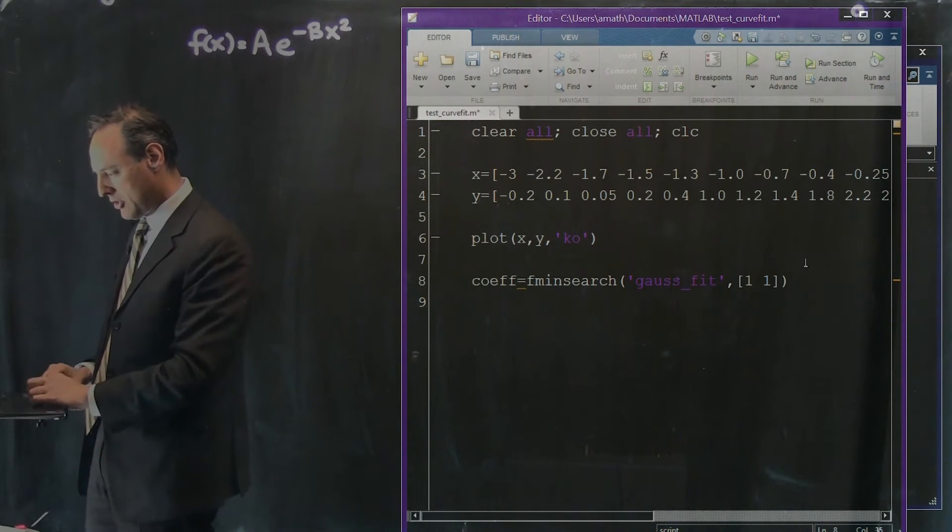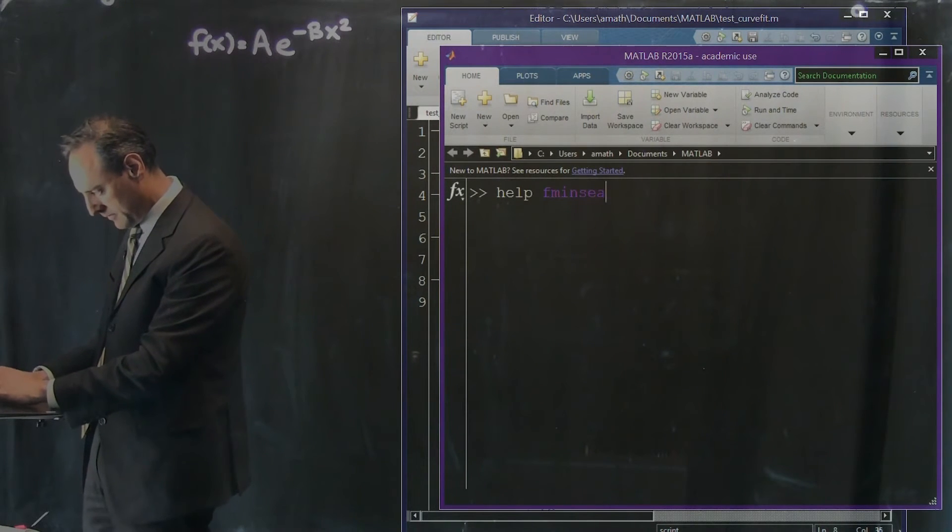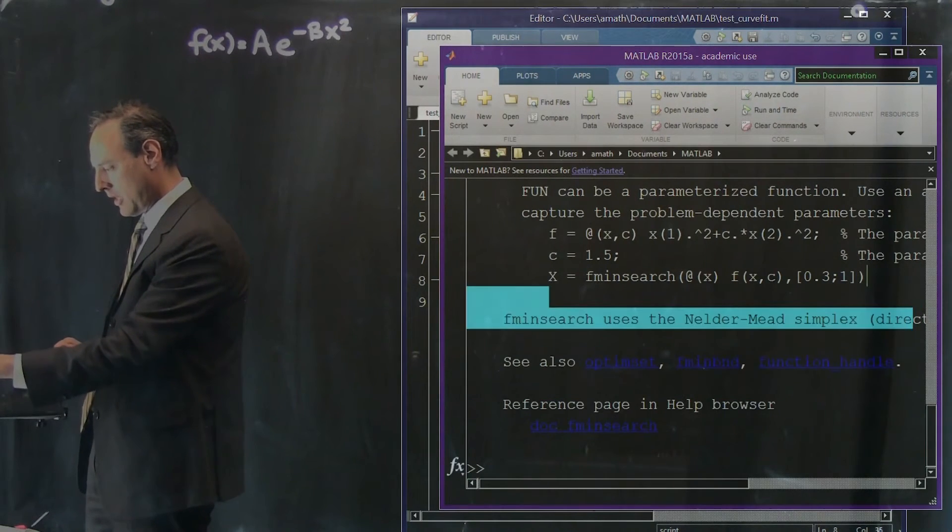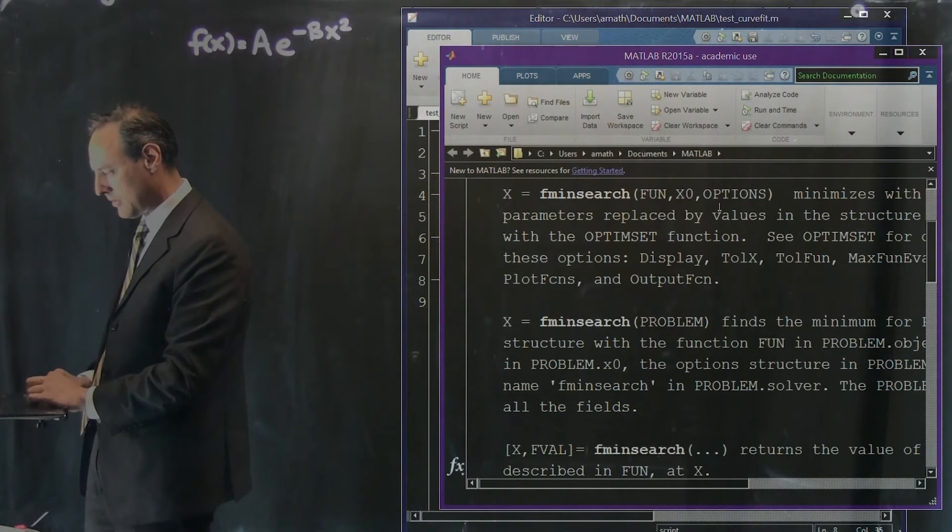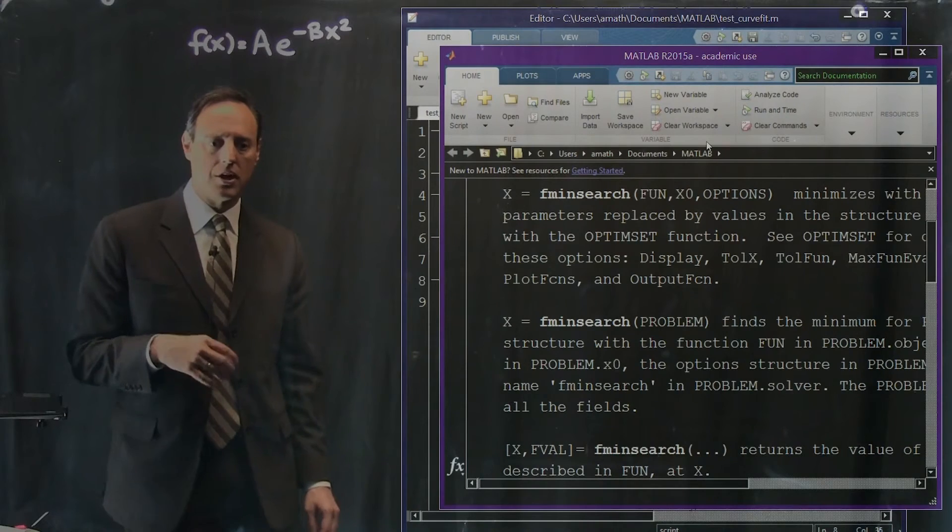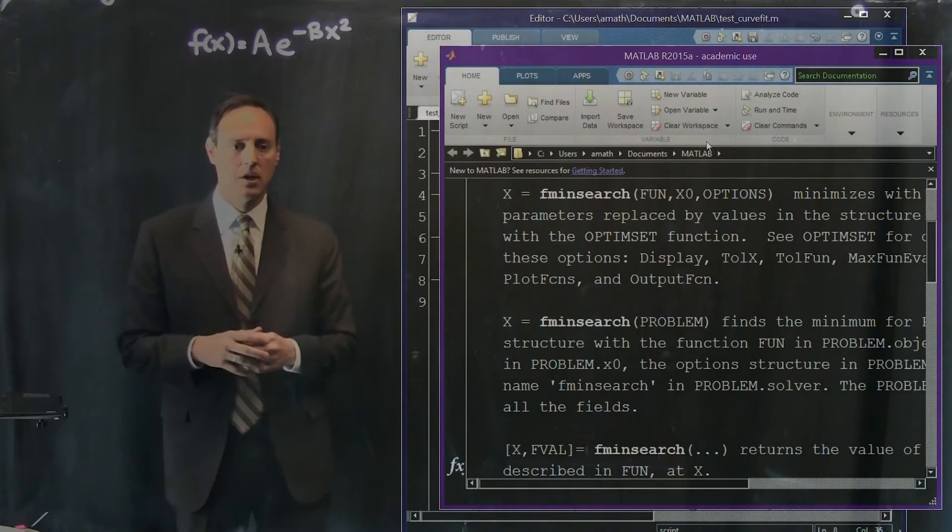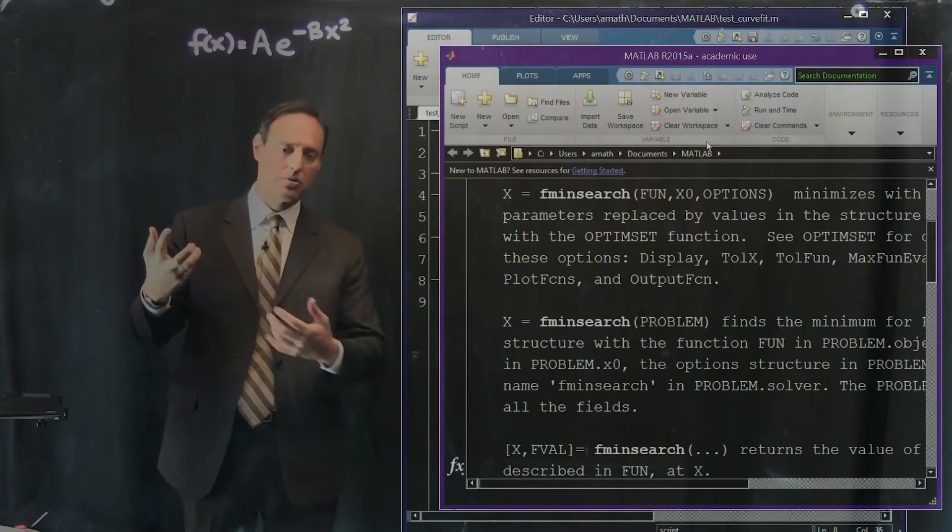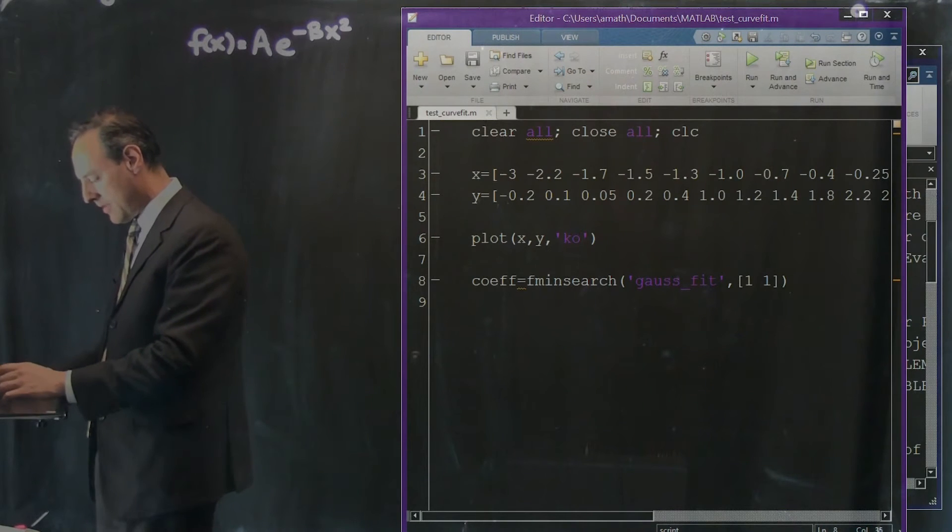Now typically in the fminsearch world, the way this command works you're going to come in and send in your functions here with some options. We're not going to enact any options. The options are things like I can change the tolerance setting, how many iterations, maximum number of iterations to convergence. I'm not going to do any of that, so it has default settings. I'm just going to leave that blank.